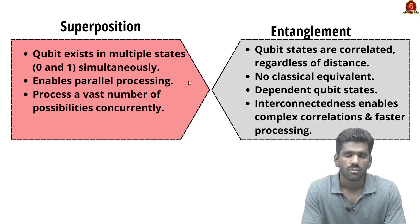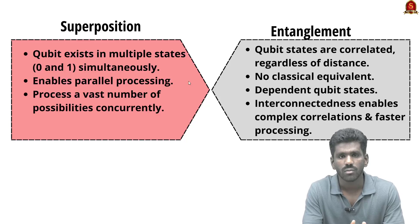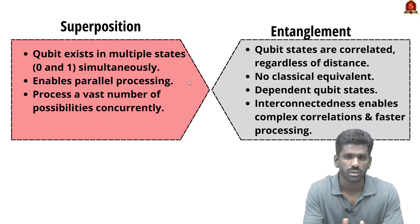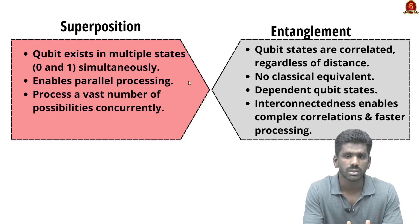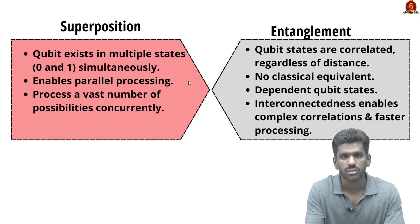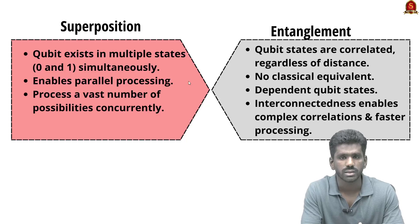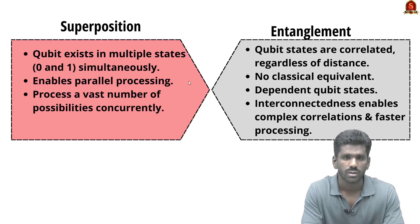A qubit, or quantum bit, is the fundamental unit of quantum computing. It is capable of superposition and entanglement. A classical bit represents either zero or one, used in classical computers. A qubit, however, can exist in multiple states simultaneously due to superposition — it can represent a combination of both zero and one at the same time.